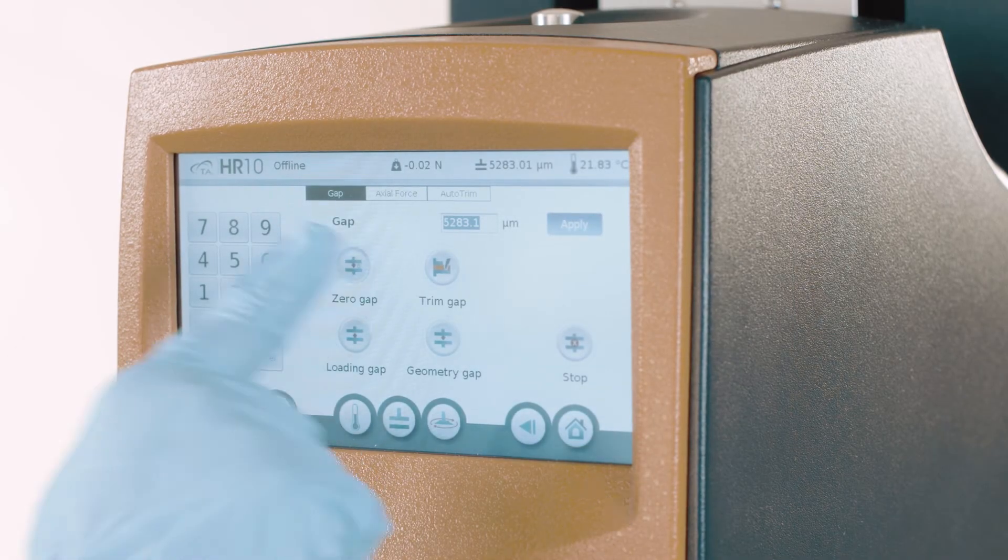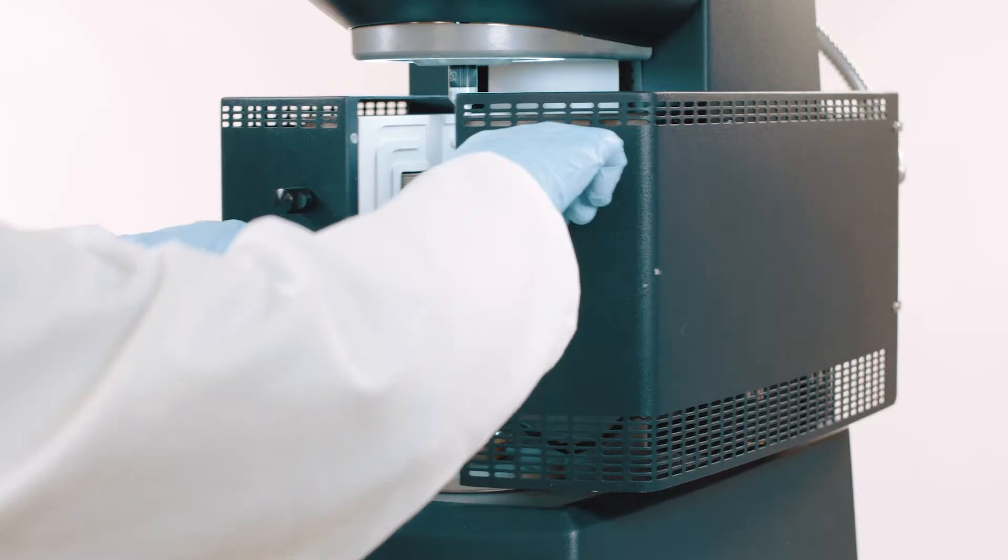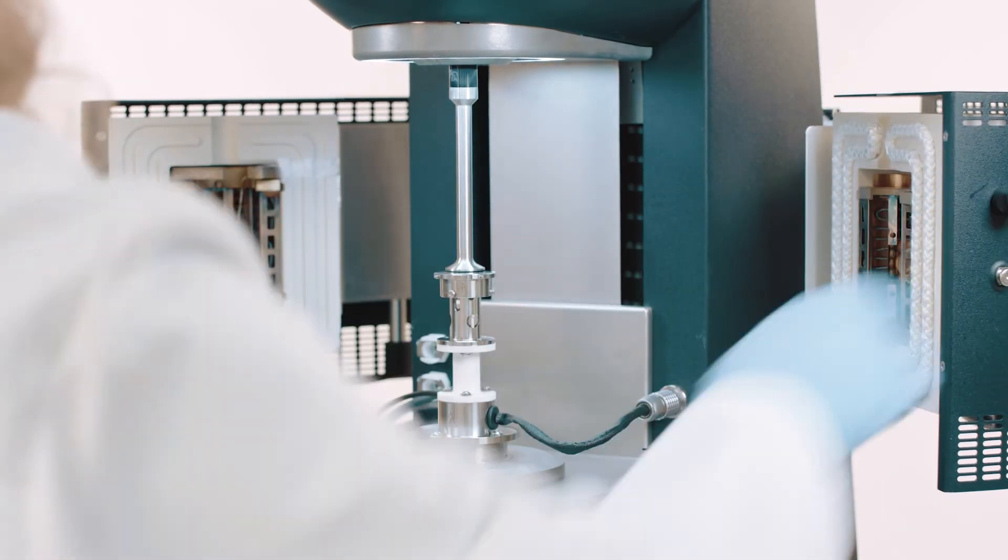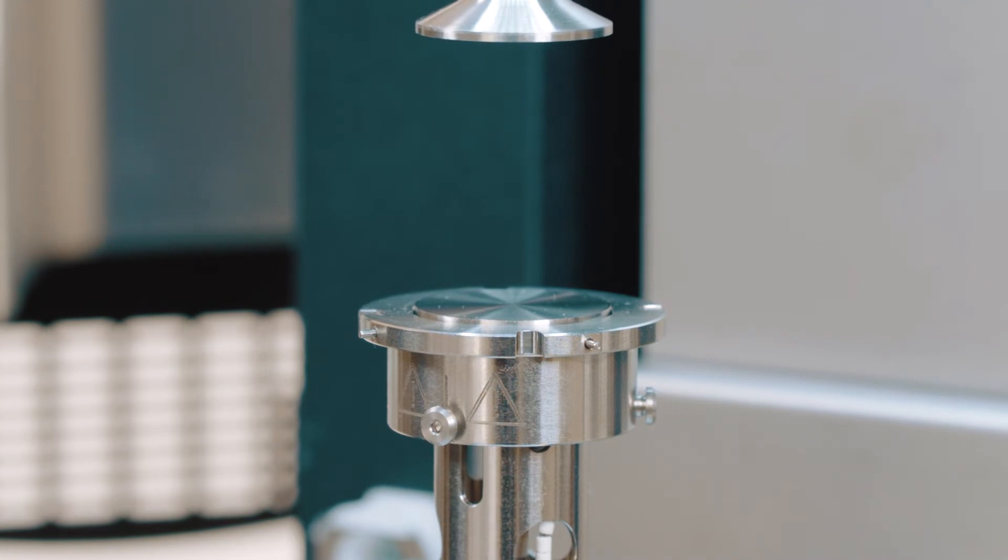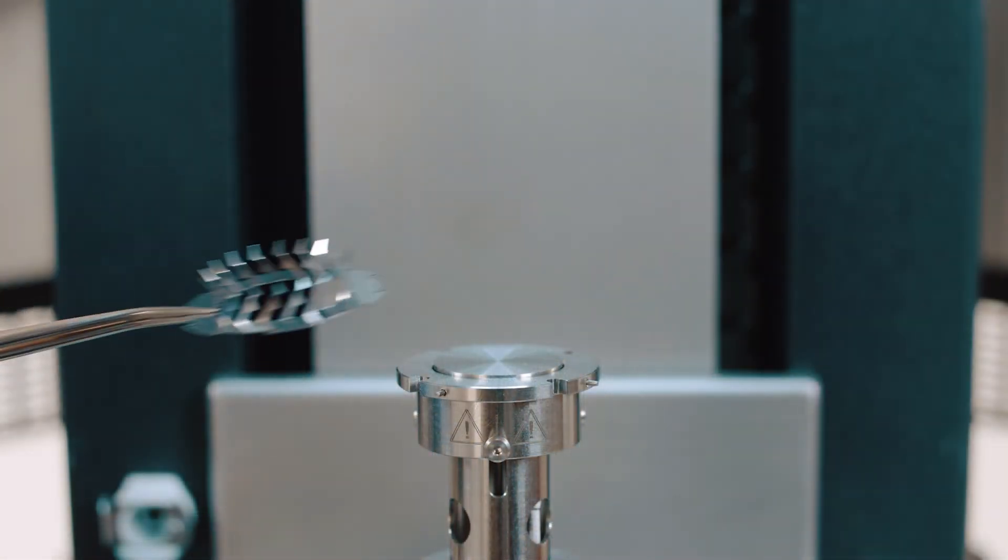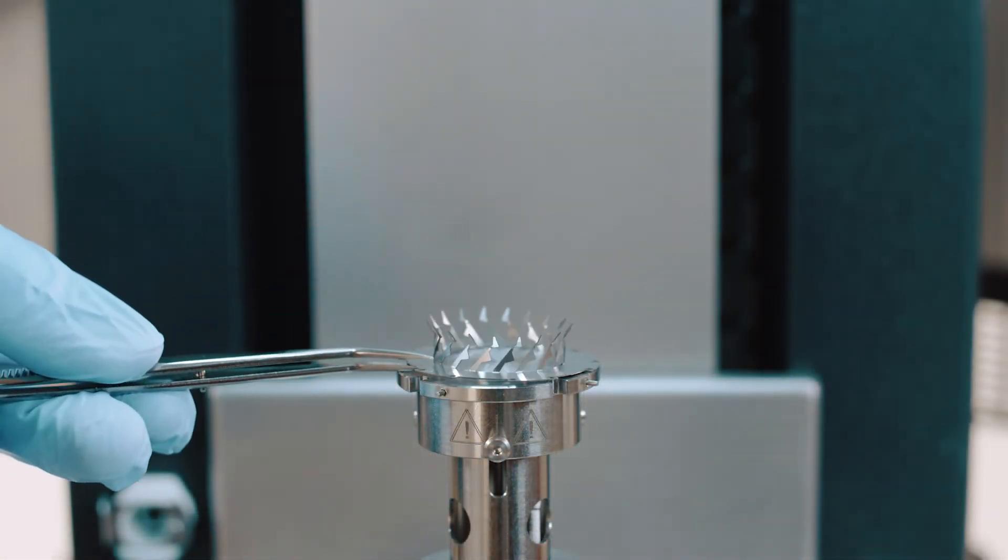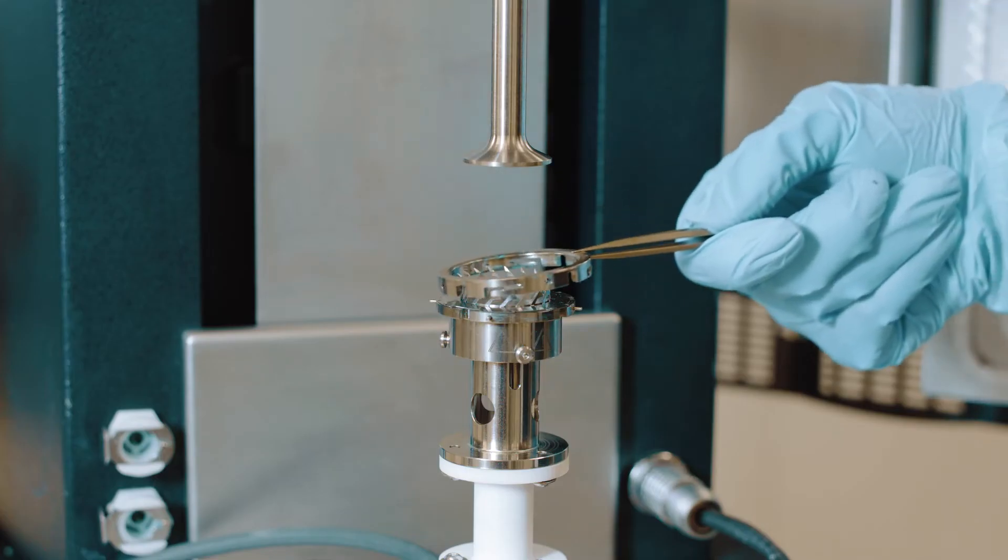Zero the geometry gap and open the oven doors. Raise the geometry to the loading gap. Using tweezers, load the disposable trimmer and secure it with the locking ring.